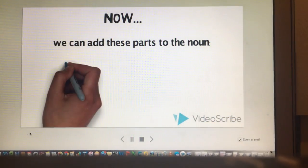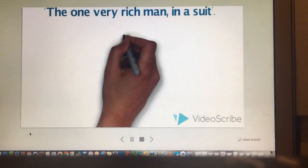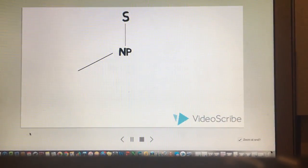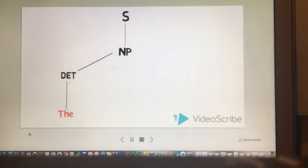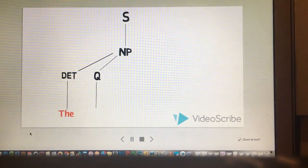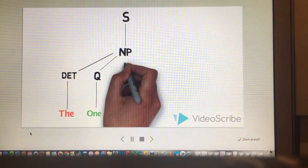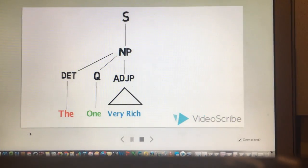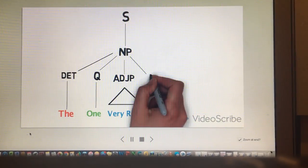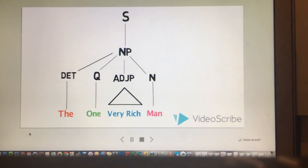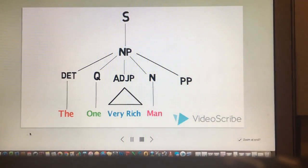Now we can add these parts to the noun: the one very rich man in a suit. Now let's break the sentence down and create a syntax tree. The determiner of the sentence is the. The quantifier of the sentence is one. The adjective phrase of the sentence is very rich. The noun is man. And the prepositional phrase is in a suit.